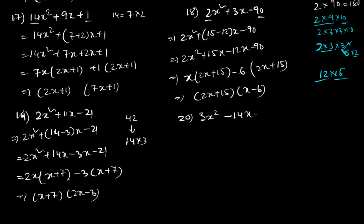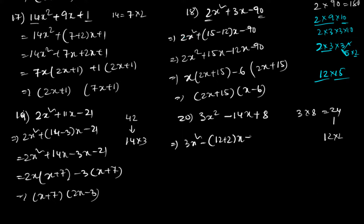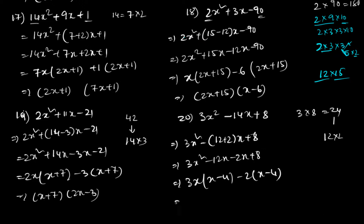Question 20: 3x² - 14x + 8. From 3 times 8 = 24, I need factors giving 14, so 12 and 2. We write 3x² - 12x - 2x + 8. Taking 3x common gives 3x(x - 4), taking -2 common gives -2(x - 4). The answer is (x - 4)(3x - 2).